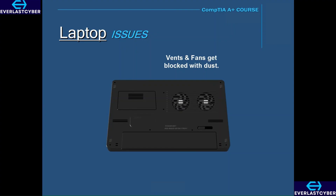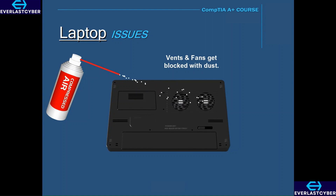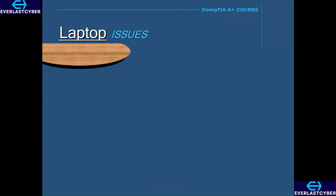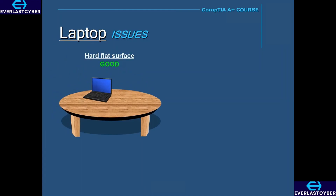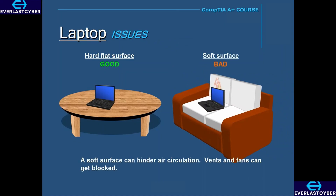The best way to fix this is to get a can of compressed air and blow out the vents and fans, freeing them from any dust or debris. Another issue that causes a laptop to overheat is that people use their laptops without placing them on a hard, flat surface — for instance, using them on the couch or on their bed. When this happens, the vents and fans will get blocked and hinder air circulation, especially if the fans and vents are on the bottom of the laptop.